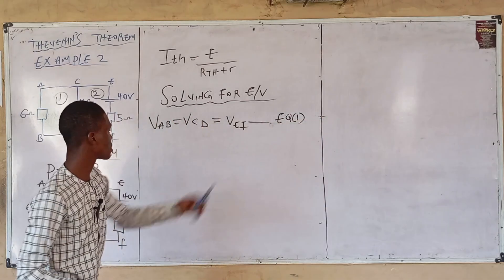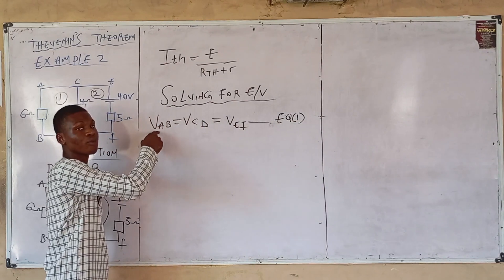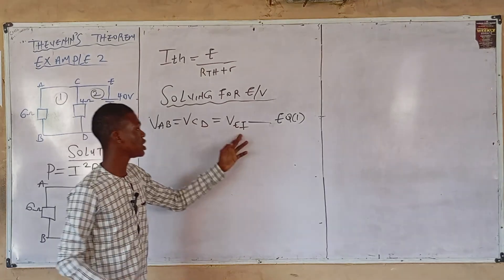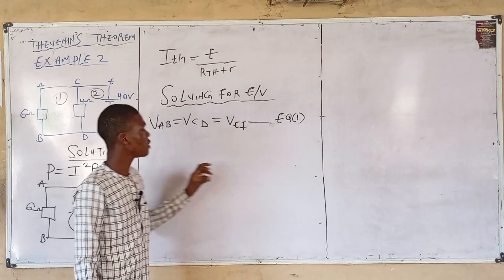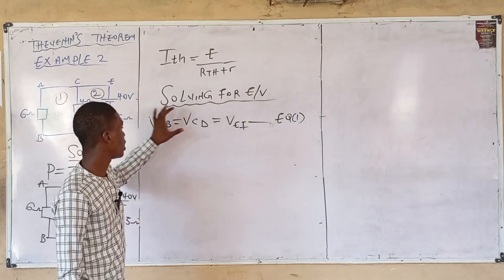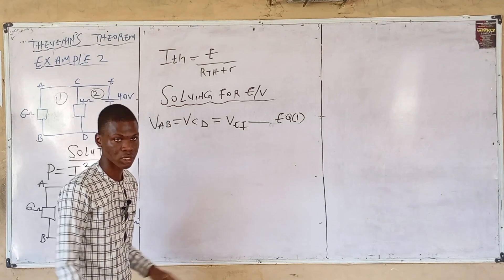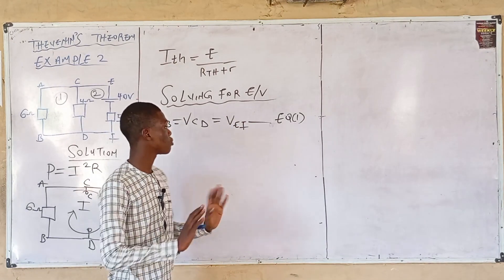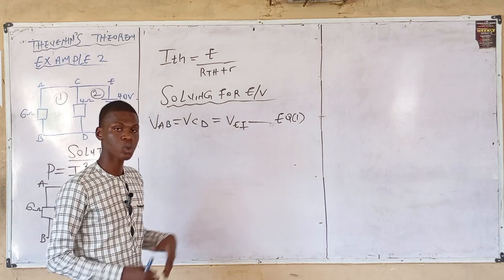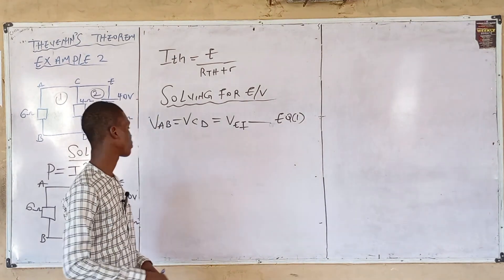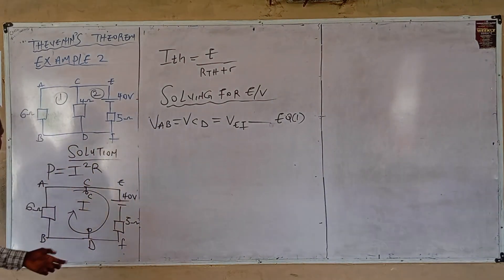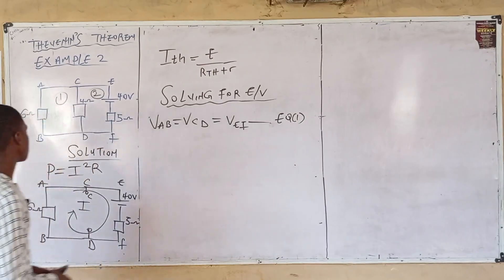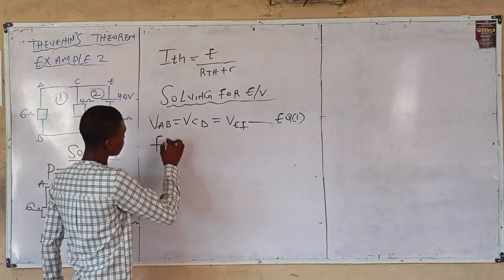From Equation 1: voltage of branch AB equals voltage of branch CD, and voltage of branch EF also equals voltage of branch CD. So if I know the voltage of branch AB, I automatically know the voltage at branch CD — which is the load resistor voltage. The question is: how do we calculate V_AB and V_EF? From Ohm's law, V equals IR — call this Equation 2.